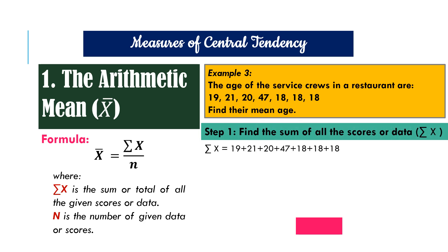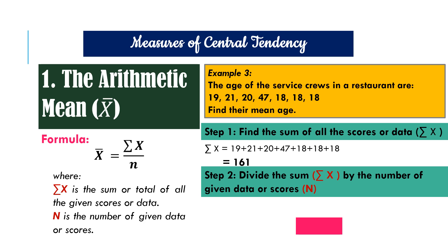For step one, we have to again find the sum of all the ages. The sum is 161. Step two, we divide it by n. In the given, there are 7 service crews. So our n is 7. And substituting the result in step one and step two to our formula, we have 161 divided by 7. And the result is 23.86. So it means that the average age of the service crews is 23.86.